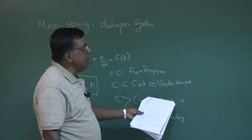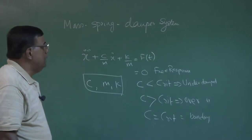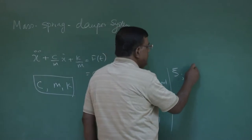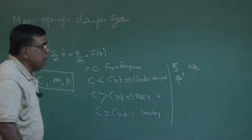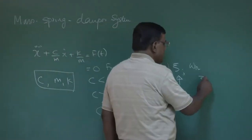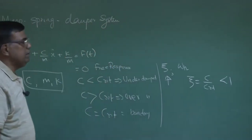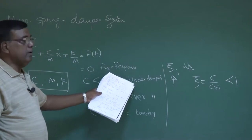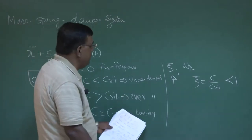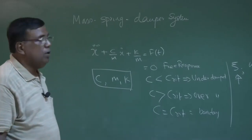If it is the overdamped case there would not be any oscillation, but in the underdamped case there will be oscillation and it will take some time to come back to equilibrium. We defined two important quantities: zeta and omega_n. Zeta is the damping ratio, defined as the ratio of actual damping c divided by c-critical. If zeta is less than 1, the system is underdamped; if zeta is greater than 1, it is overdamped; if zeta equals 1, it is critically damped and will return fastest to equilibrium once the disturbance is withdrawn.